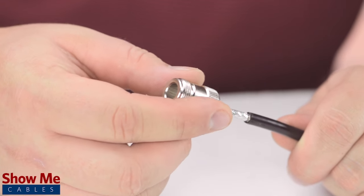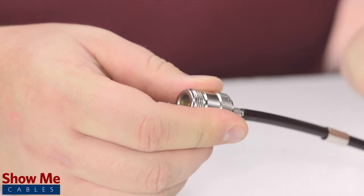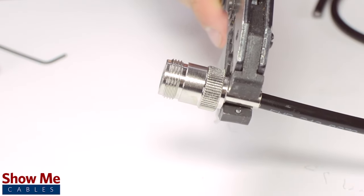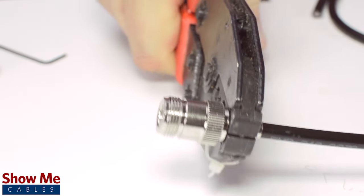Place the connector onto the cable and pull the ferrule up to the base of the connector, folding the shield with it. Then, use the crimp tool to terminate the ferrule onto the jacket.